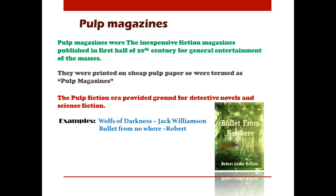Pulp magazines were inexpensive fiction magazines published in the 20th century for the general entertainment of the masses, printed on cheap pulp paper — which is why they were called pulp magazines. The pulp fiction era provided the ground for detective novels and science fiction. Examples include Wolves of Darkness by Jack Williamson and Bullet from Nowhere by Robert Leslie Bellem.